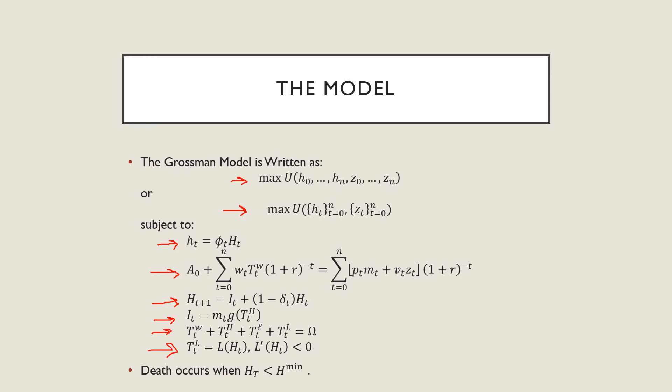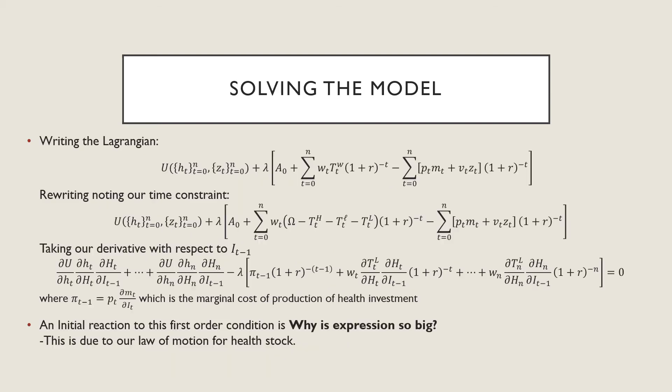In terms of solving this model, we're going to write out a Lagrangian and we're going to rewrite this thing while noting our time constraints. So we're going to first look at this tw and we're going to rearrange our time constraint and we're going to get this big thing here - this is a little messy to deal with.